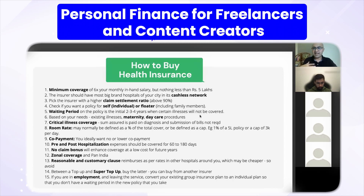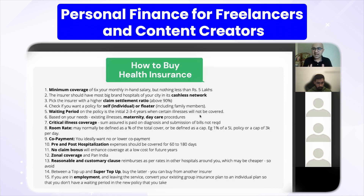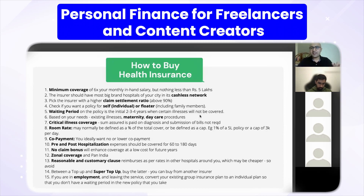The cashless network means you don't need to pay anything upfront — the insurance company pays the hospital directly. Ensure the best hospitals of your city are in the cashless network list. You should also look at the claim settlement ratio, which should ideally be above 90%. When you buy from places like PolicyBazaar, almost all companies advertise their claim settlement ratio — the percentage of total claims actually paid. However, there is much more you need to question and look at which normally remains hidden.